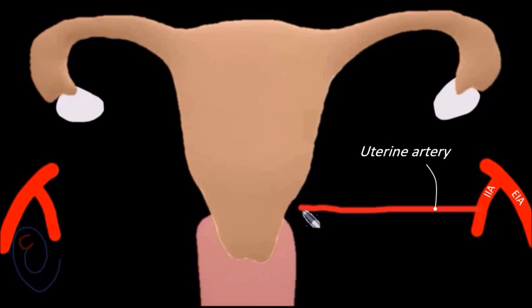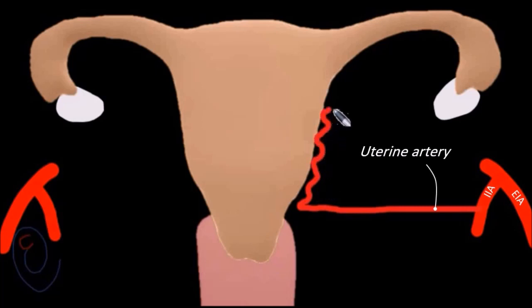Once it reaches this point, the uterine artery divides into two branches. The main branch ascends along the lateral border of the uterus in a highly convoluted manner, and just before it reaches the fallopian tube, it divides into three terminal branches.